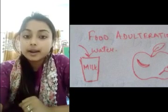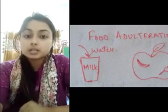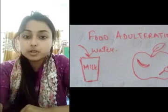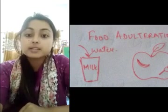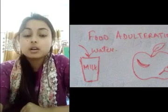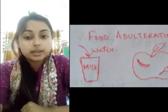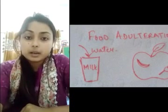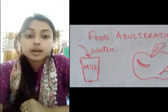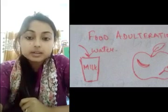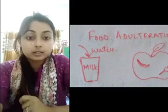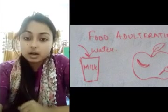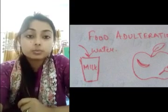Food adulteration is the process by which the quality of food is lowered either by adding low quality material or by removing a valuable ingredient. Examples of food adulteration include mixing milk with water to add volume, adding starch in paneer to make it thicker and softer, and mixing jaggery in honey.